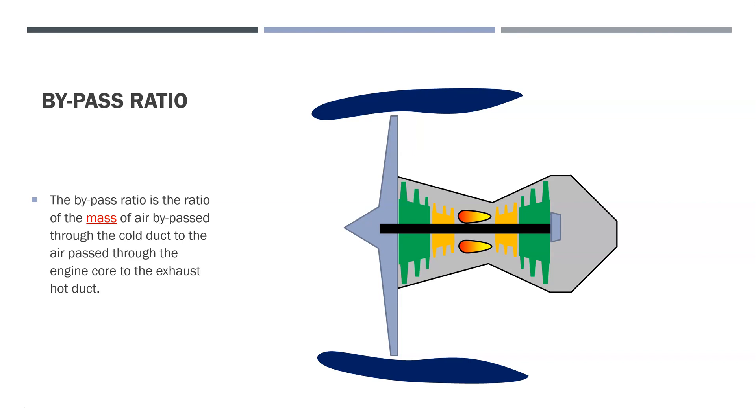The bypass ratio is defined as the ratio of the mass of air that goes through essentially the fan, so it goes through here and here, compared to what goes through the engine core.